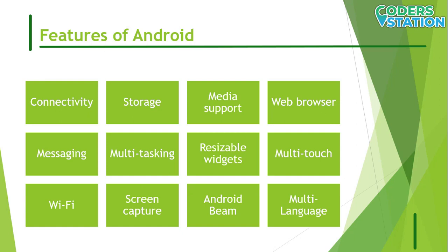Widgets are resizable, so users can expand them to show more content or shrink them to save space. Android also has native support for multitouch. Wi-Fi Direct lets apps discover and pair directly over a high-bandwidth peer-to-peer connection. Screen capture is supported by pressing the power and home button simultaneously, available after Android 4.0. Android Beam, an NFC-based technology, lets users share content by touching two NFC-enabled phones together. Android also supports multi-language, including single-direction and bi-directional text.